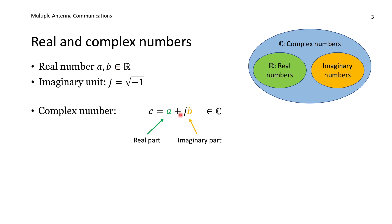So if we take a plus jb, then we have a real part and an imaginary part, and the sum of these is called a complex number. We have taken the real set and the imaginary set, and together we get all the complex numbers, which we denote with C.